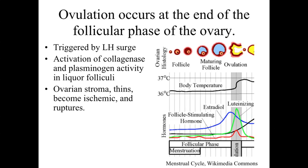Ovulation is going to be occurring at the end of the follicular phase, triggered by an LH surge. As we can see on the diagram to the right, follicle-stimulating hormone is going to decrease and be relatively stable at the end of the follicular phase. Estradiol is continually increasing — produced by those follicular cells — signaling maturation of the ovarian follicle. When it gets to a certain level, it's going to trigger a spike in LH, a spike in luteinizing hormone. This is going to trigger activation of the collagenases and plasminogen activity within the liquor folliculi, causing the ovarian stroma and connective tissue to thin, become ischemic, and weaken, promoting the rupturing and release of the ovum.